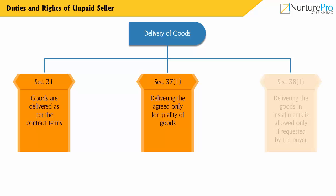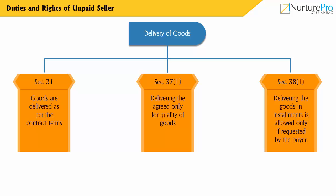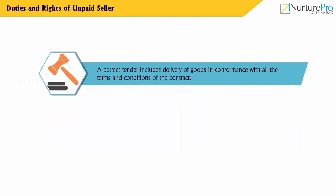According to Section 38-1, delivering goods in instalments is allowed only if requested by the buyer. A perfect tender includes delivery of goods in conformance with all the terms and conditions of the contract.